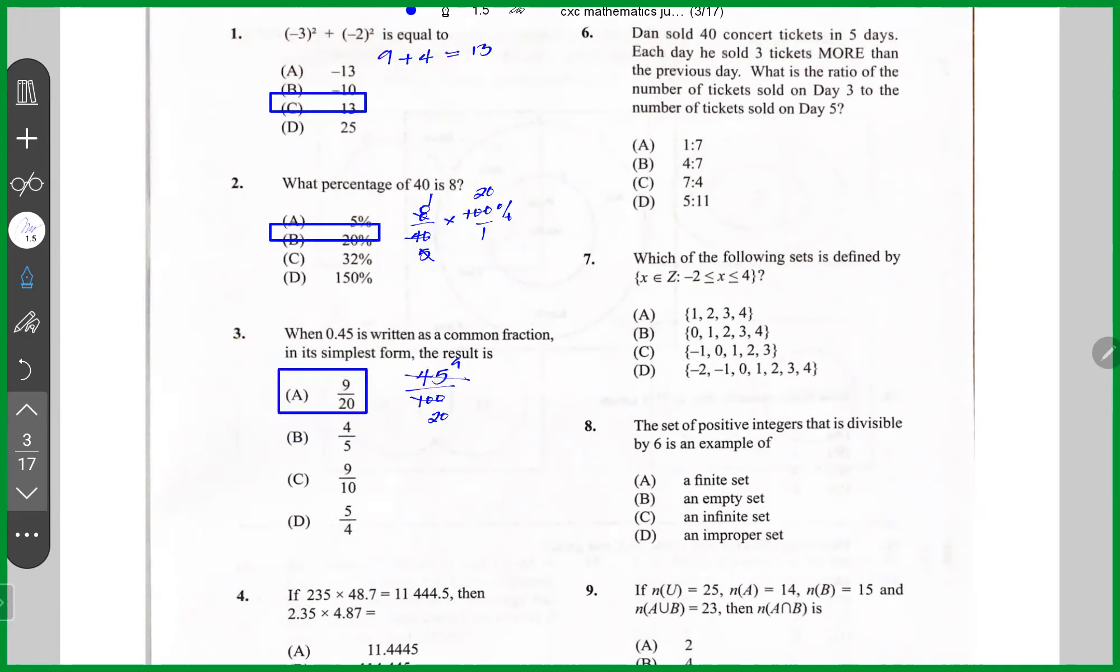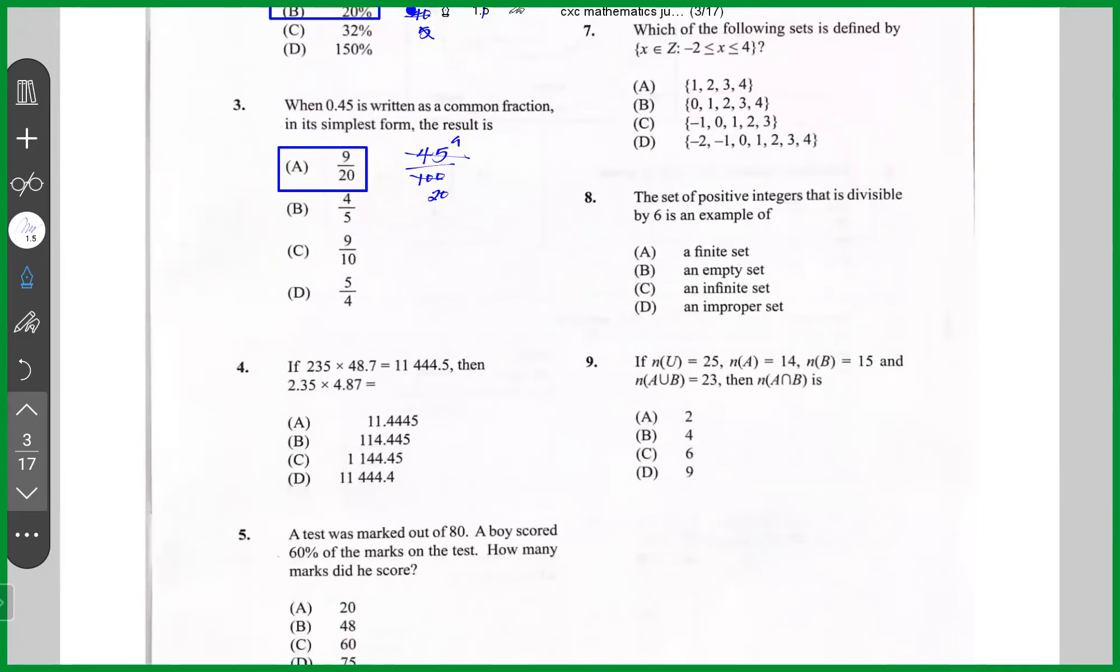Question number four. 2.35 times 4.87. All right, I really want to work this out. 4.87 is close to five. 2.35 is close to two. Two times five is 10. So I would choose the answer that is closest to 10. Answer is A.